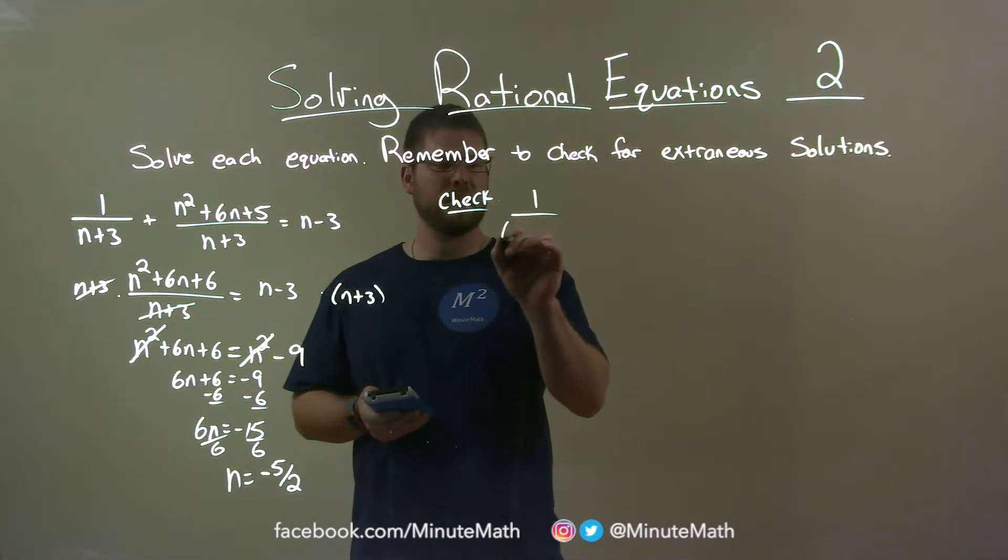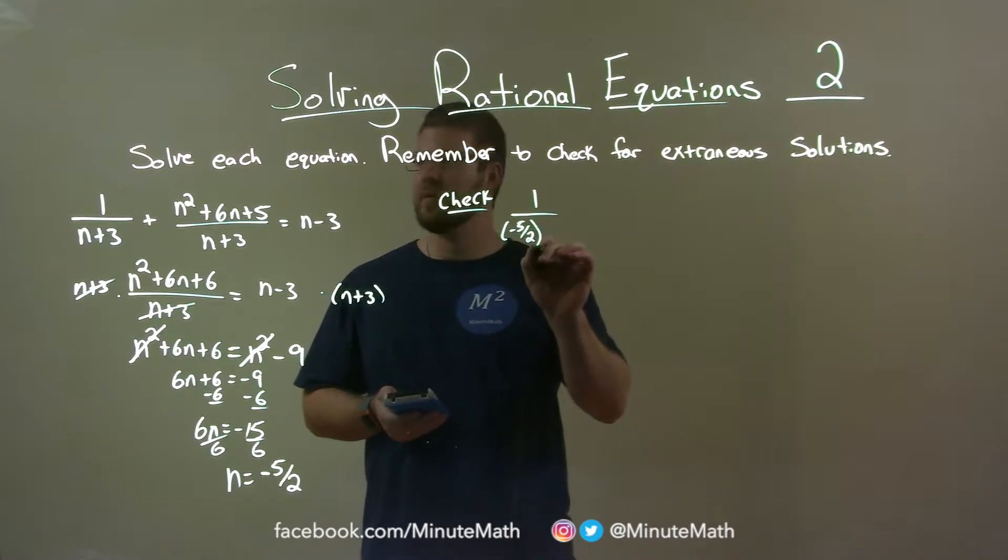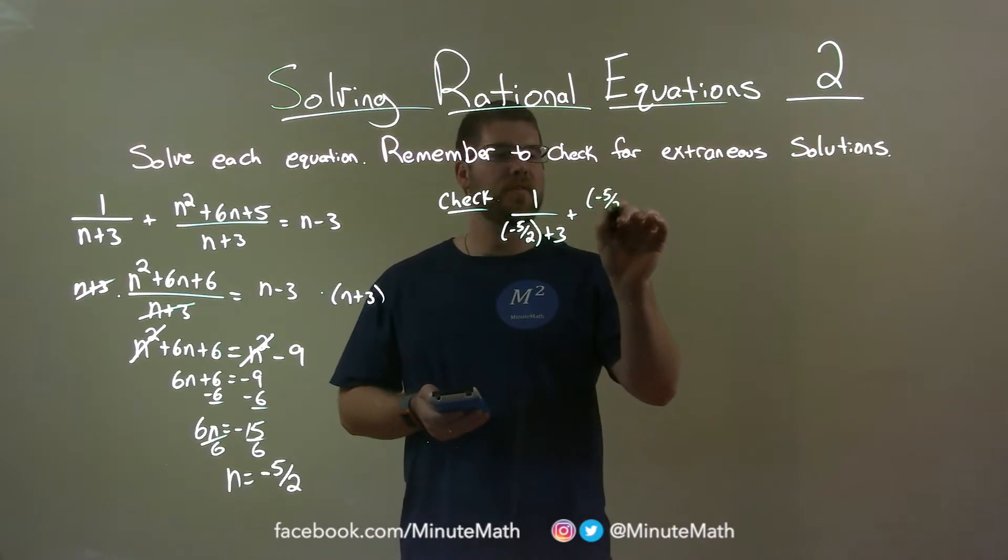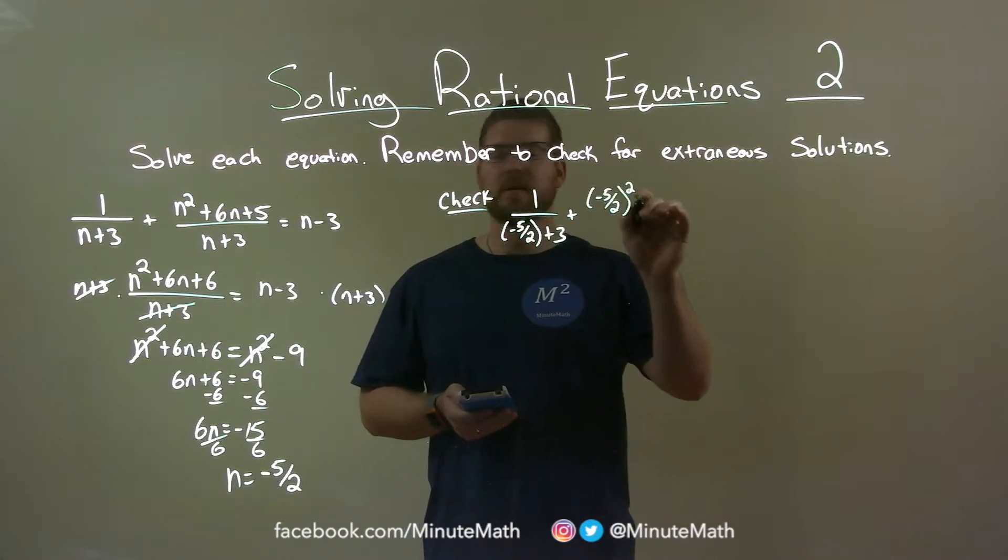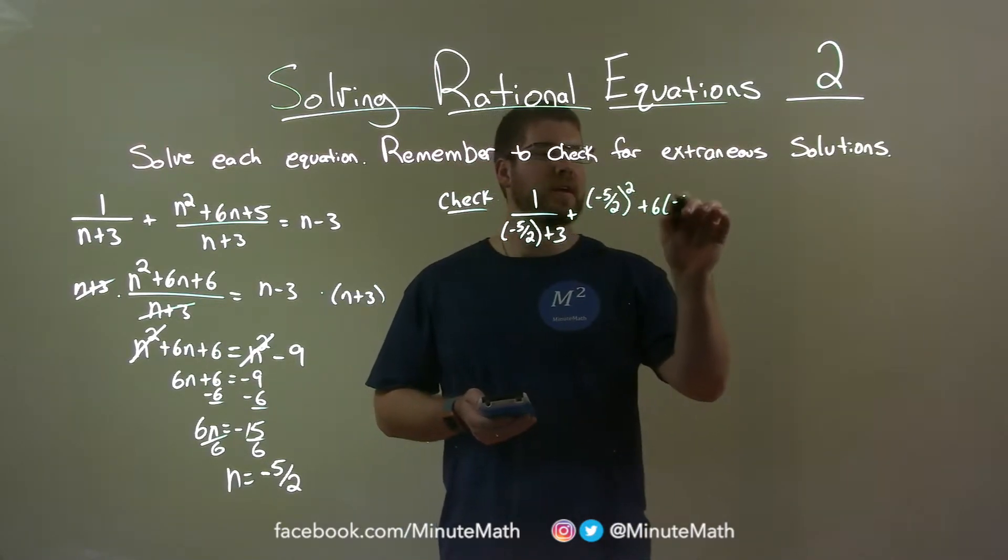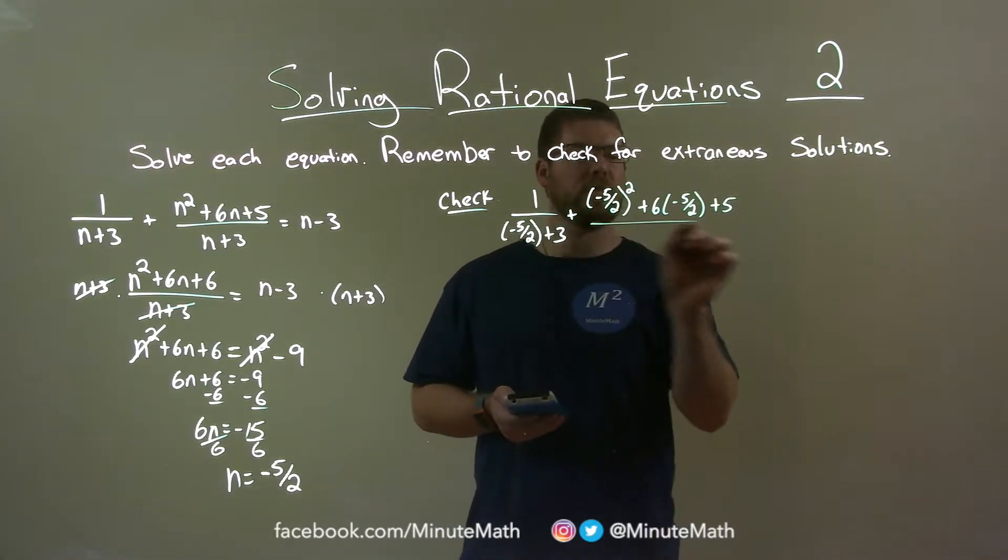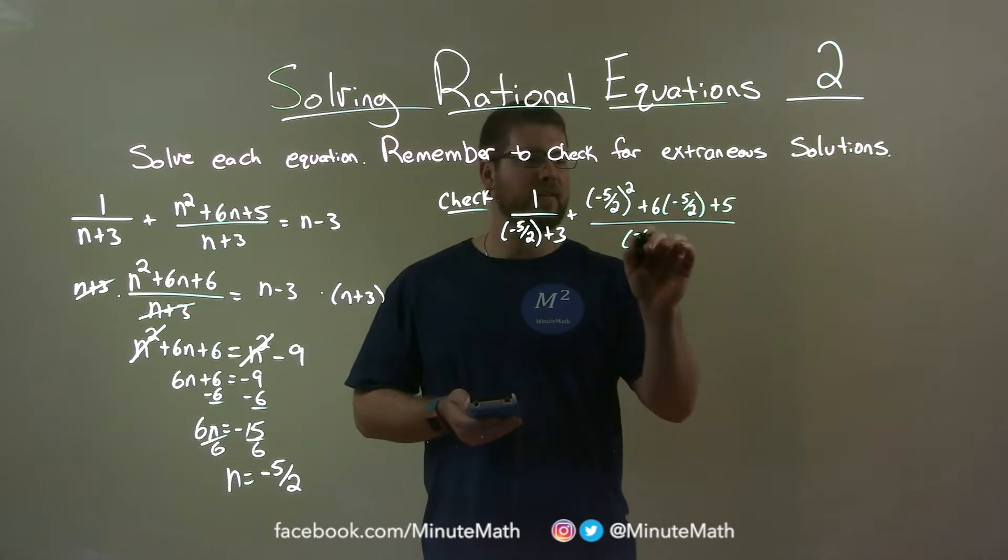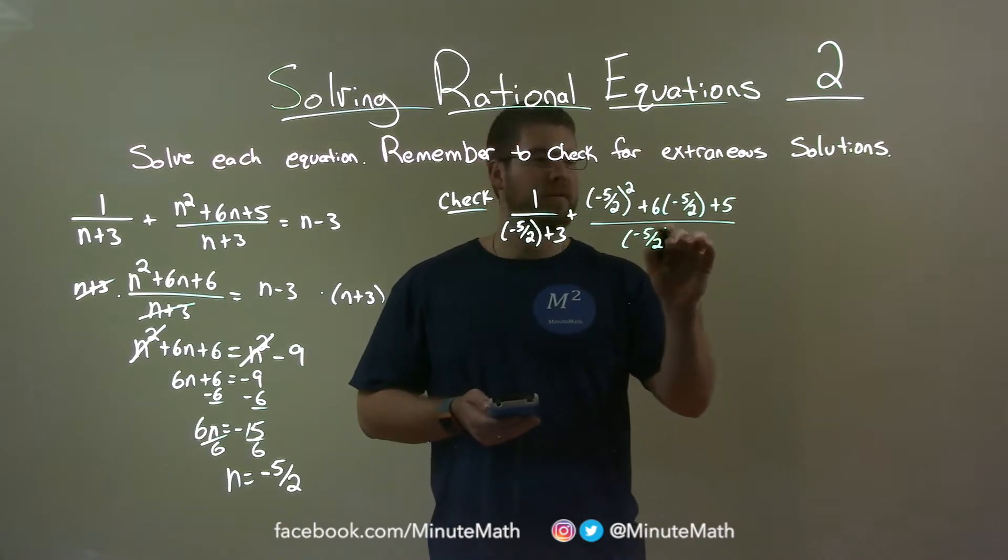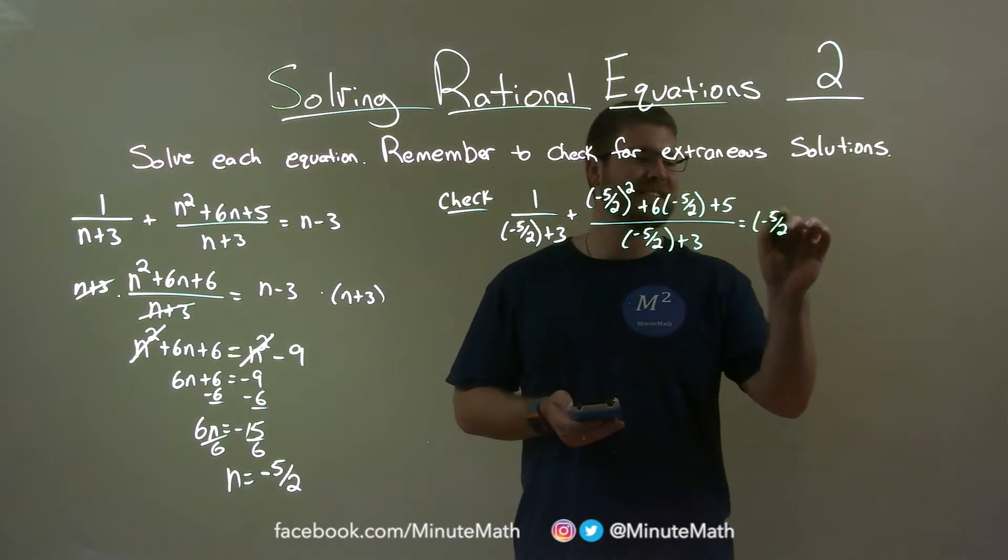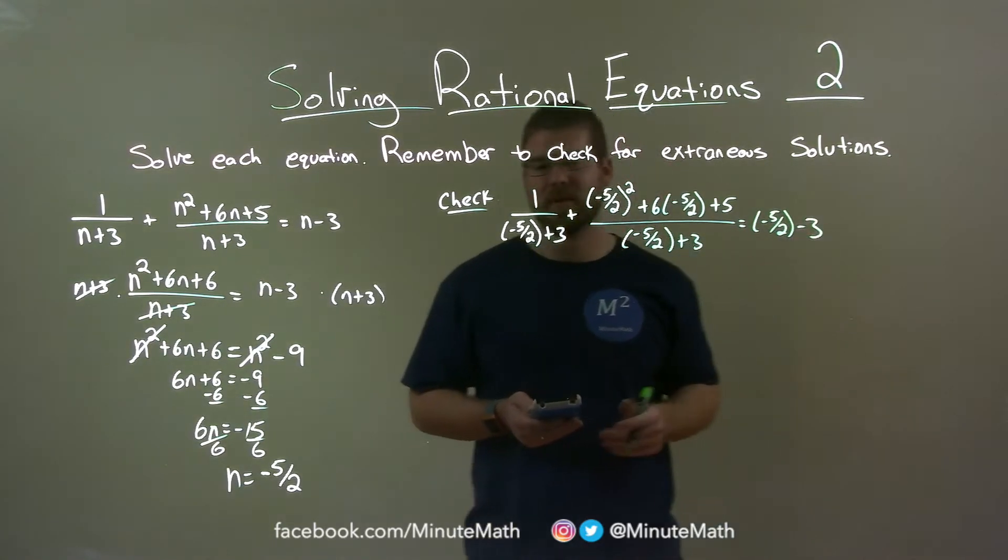1 over negative 5 halves plus 3, plus negative 5 halves squared, plus 6 times negative 5 halves plus 5, over negative 5 halves plus 3, is equal to negative 5 halves minus 3.